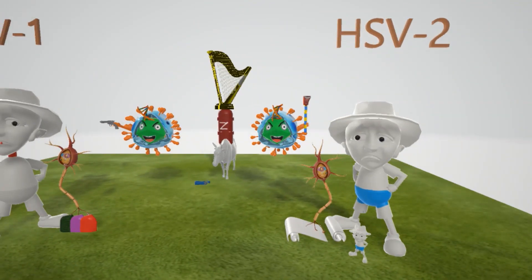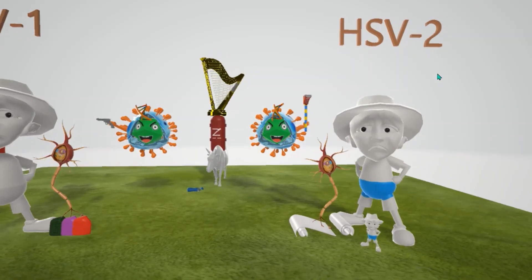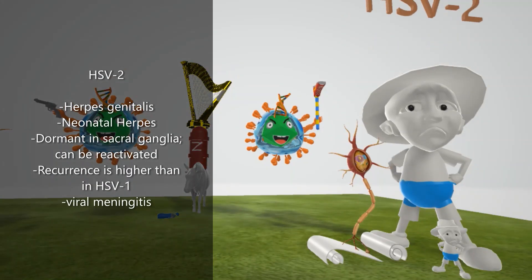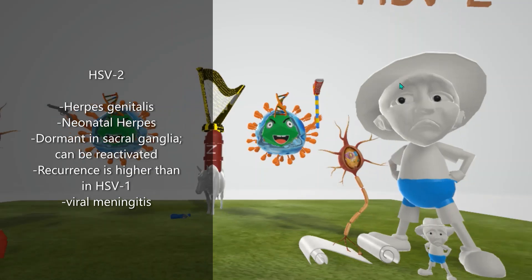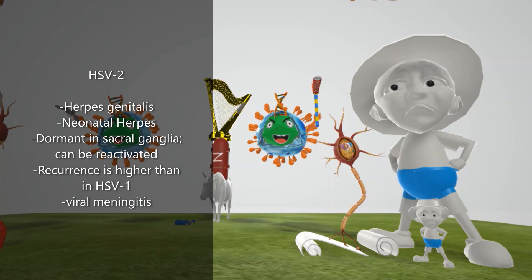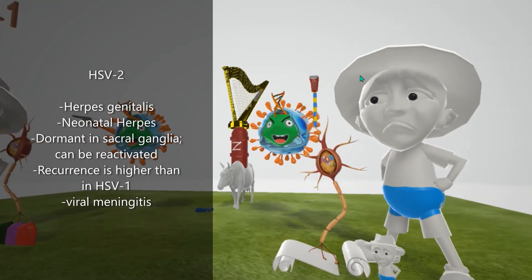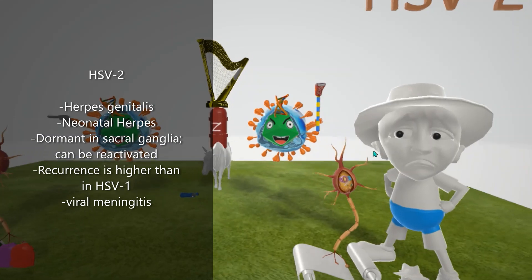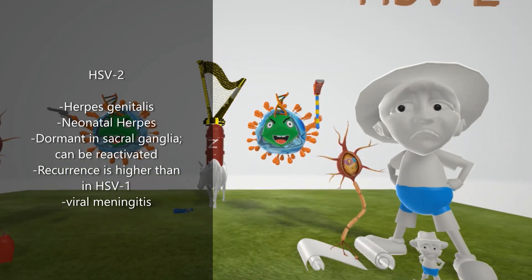Herpes simplex virus 2 is sometimes called the below-the-waist virus, with HSV-1 being above the waist. HSV-2 is associated with herpes genitalis, in which there are severe, painful genital ulcers. Extragenital complications in HSV-2 are rare. The baby figure next to him helps remember neonatal herpes - infants can acquire HSV-2 traveling through the vaginal canal of an infected mother. A nerve in a sacred scroll helps remember the sacral ganglia, where HSV-2 lies dormant and can reactivate during periods of stress.